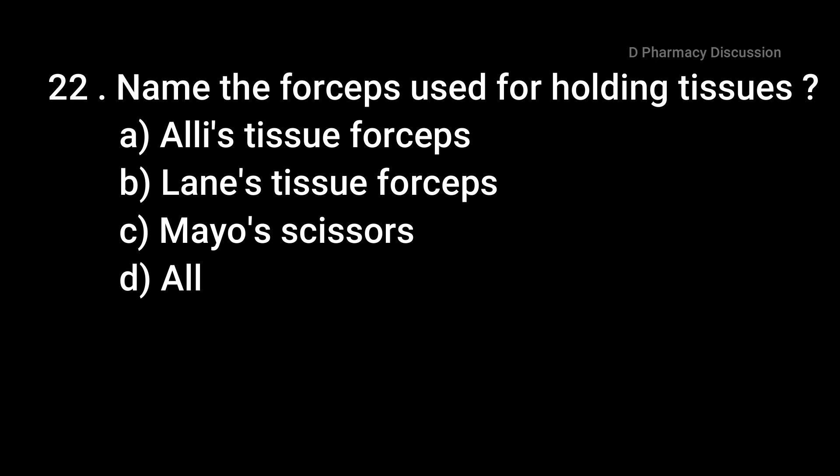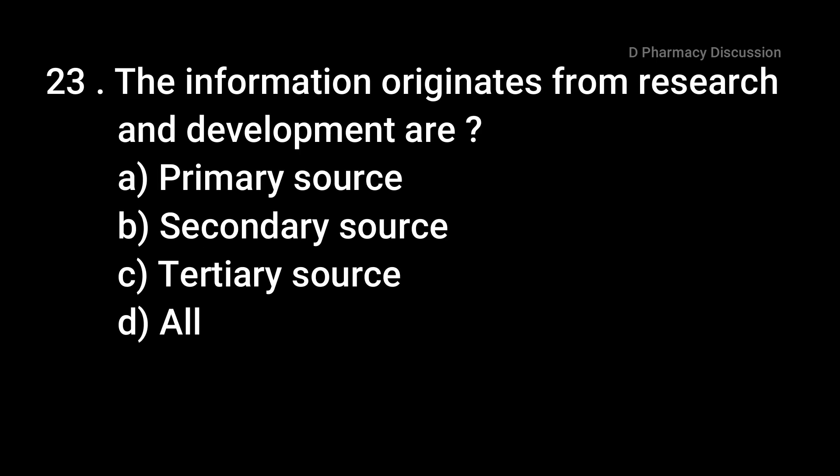Question number twenty-two: name the forceps used for holding tissues — option A: Alice tissue forceps, B: lens tissue forceps, C: Mayo scissors, and option D: all. The correct answer is option B, that is lens tissue forceps. Next question: the information that originates from research and development is — option A: primary source, B: secondary source, C: tertiary source, and option D: all. The correct answer is option A, that is primary source.